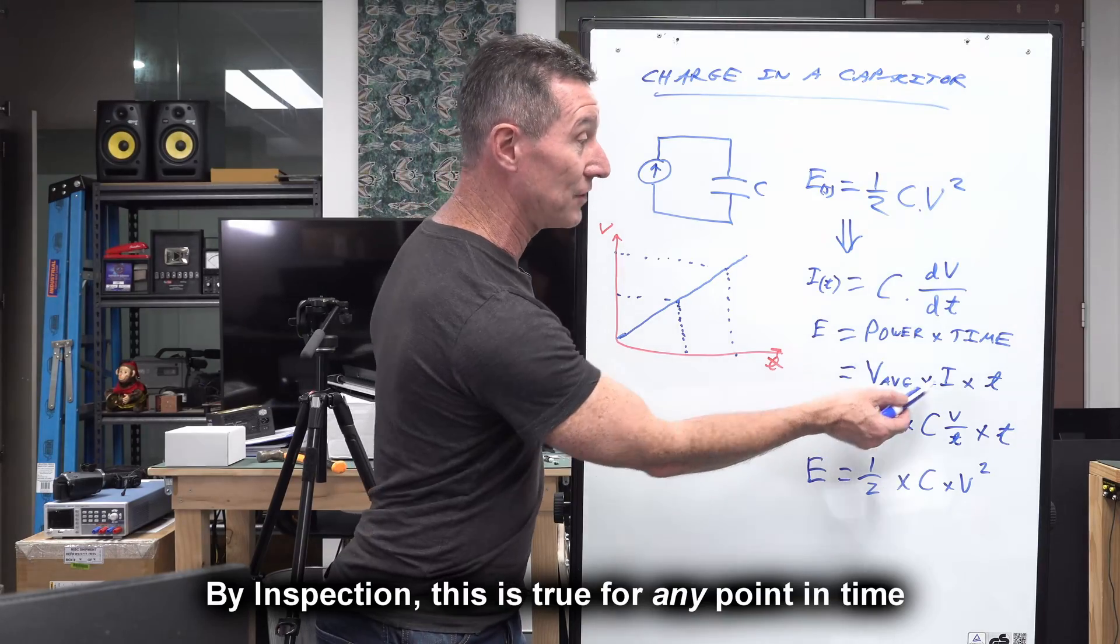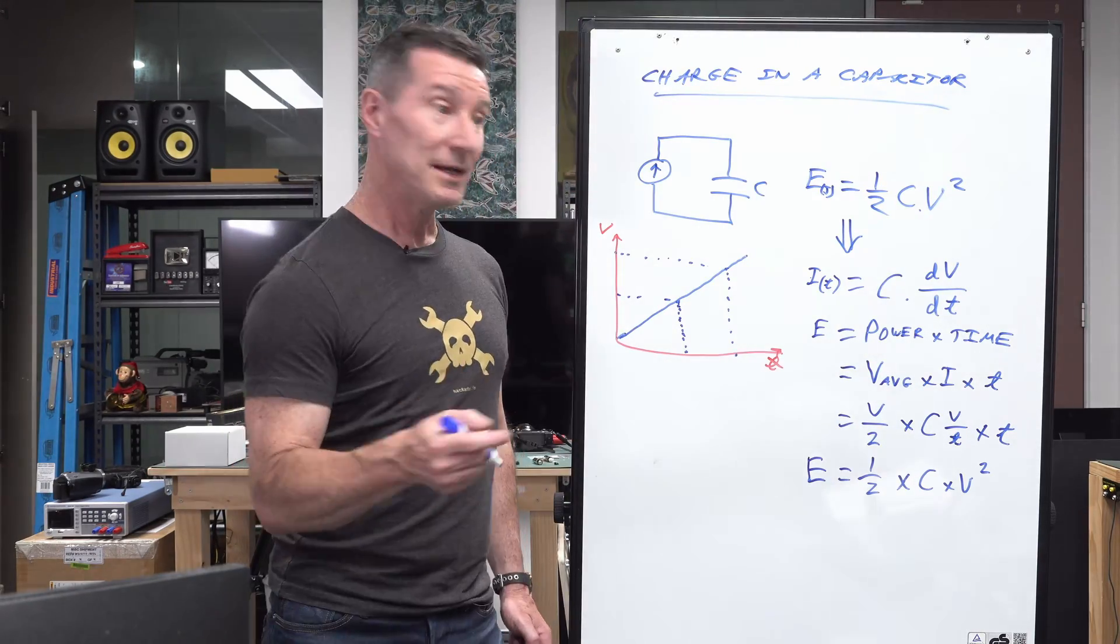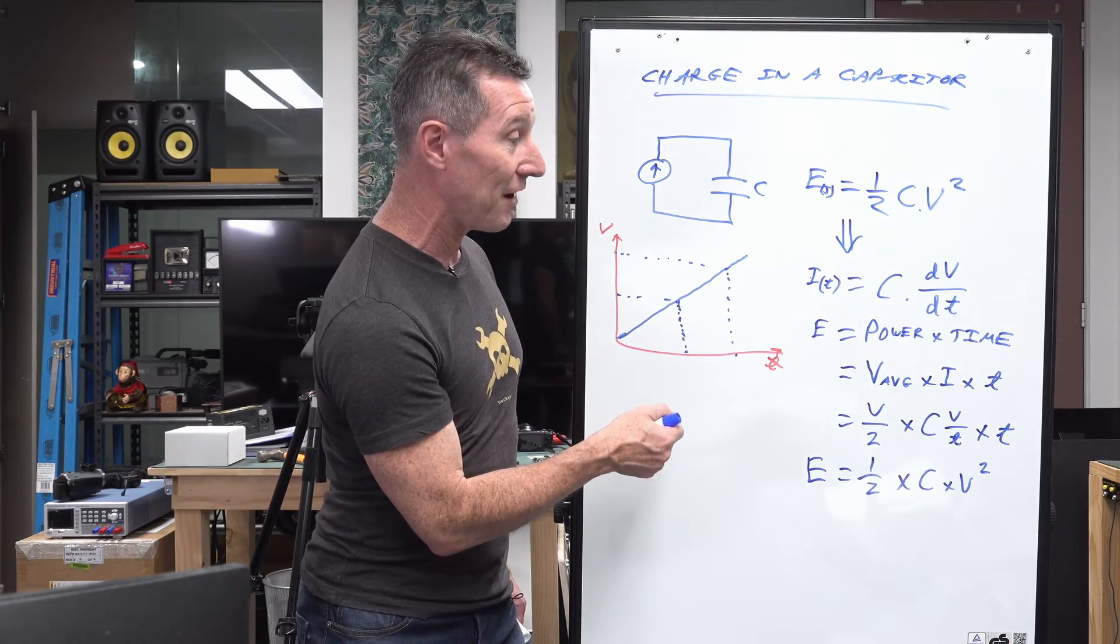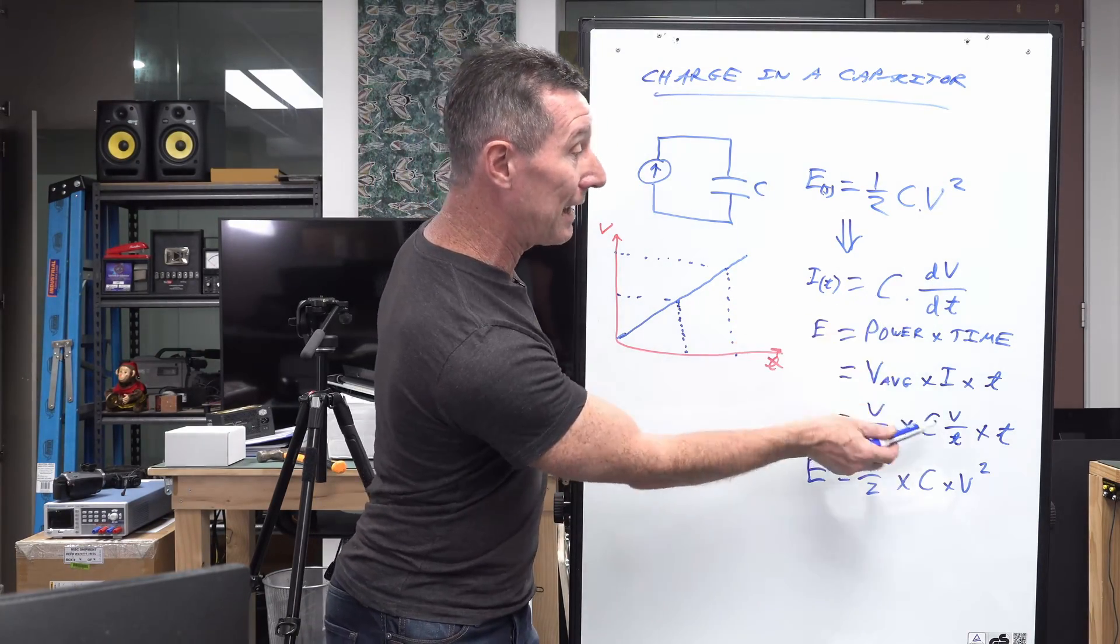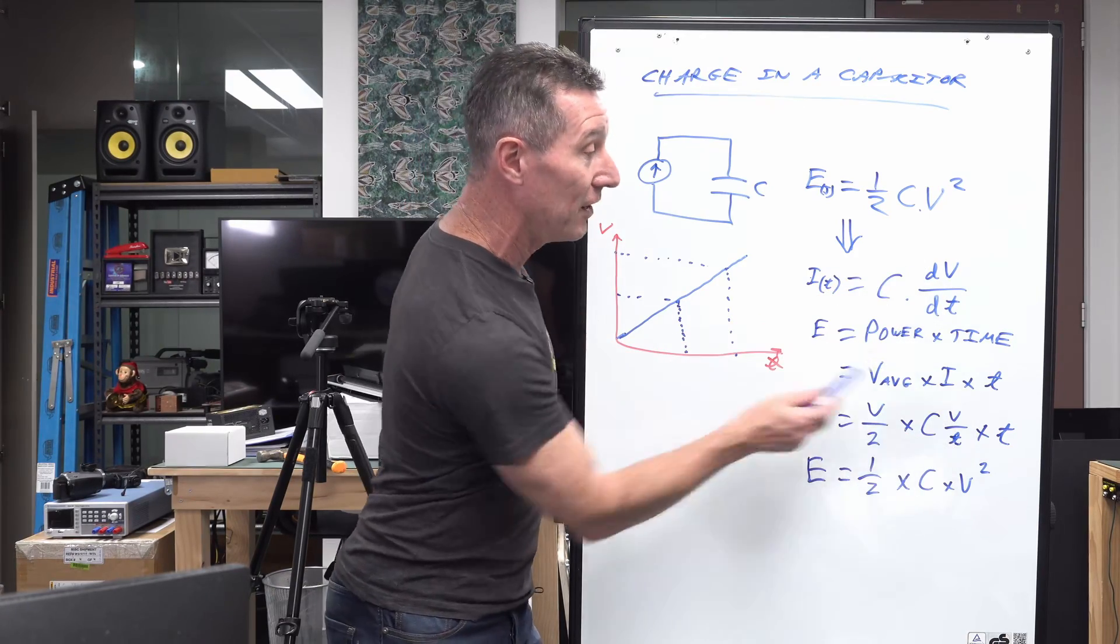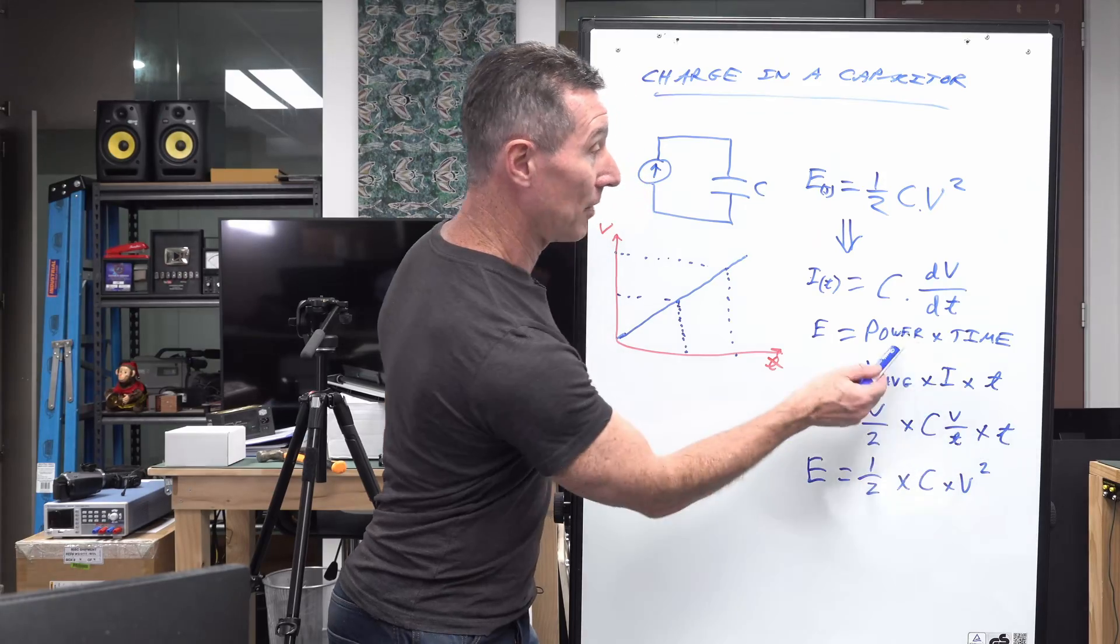So power is V average times the current there. So now it's going to be V on 2, because that's our half average value there, multiplied by what we saw up here, C V on T, the change in voltage over time. And then multiply by time, because we've still got that time component there.